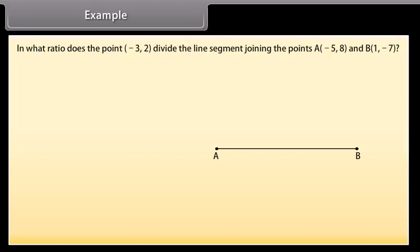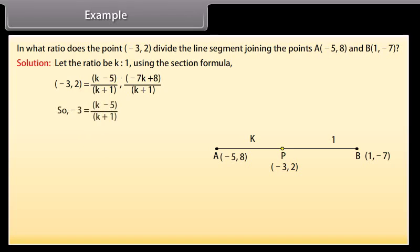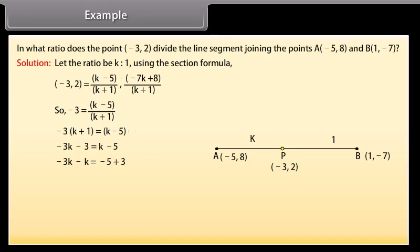In what ratio does the point minus 3, 2 divide the line segment joining the points A(minus 5, 8) and B(1, minus 7)? Solution: let the ratio be k to 1. Using the section formula, minus 3 equals k minus 5 by k plus 1. So minus 3 into k plus 1 equals k minus 5, giving minus 3k minus 3 equals k minus 5, which gives minus 4k equals minus 2. Therefore k equals 1 by 2, and the ratio is 1 to 2.